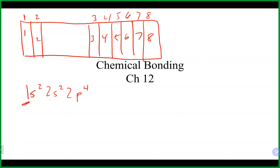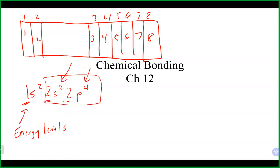The numbers like 1 and 2 in the electron configuration are the principal quantum numbers, which represent energy levels. The superscript numbers are the numbers of electrons. For the configuration 1s2, 2s2, 2p4, the two electrons in the 2s and four electrons in the 2p are the valence electrons for a total of six. That is oxygen's electron configuration, and oxygen sits in group six, so it has six valence electrons.